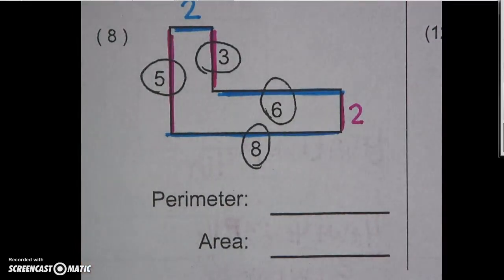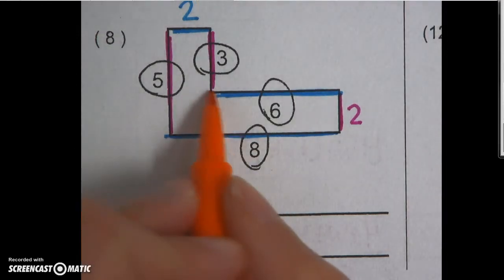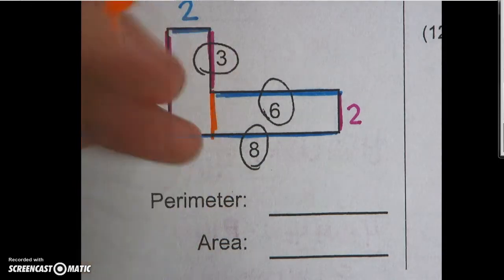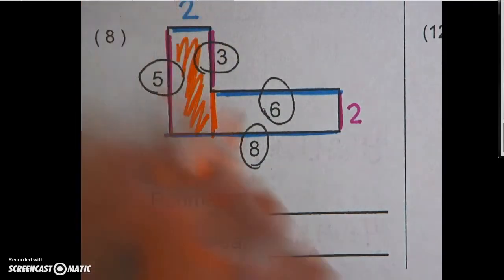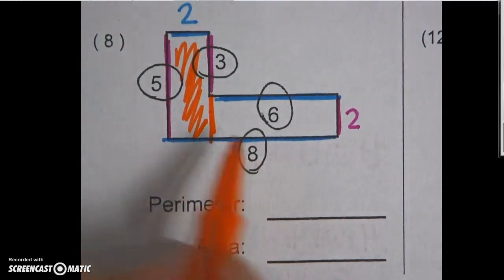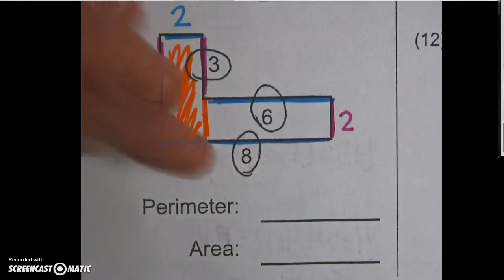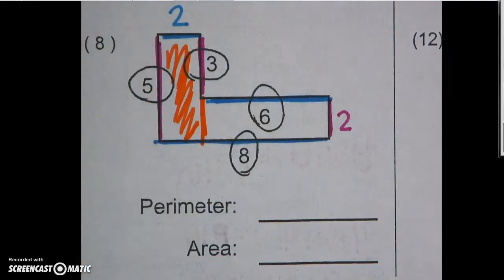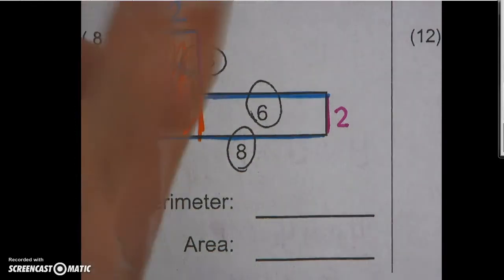To find the area, I again need to break it up into two pieces. So I can either split it here, or I can split it here. I'm going to go this way. So I'm going to find the area of my orange rectangle and then my white rectangle. My orange rectangle has a width of 2 and a length of 5. So 2 times 5, that part is going to give me 10.